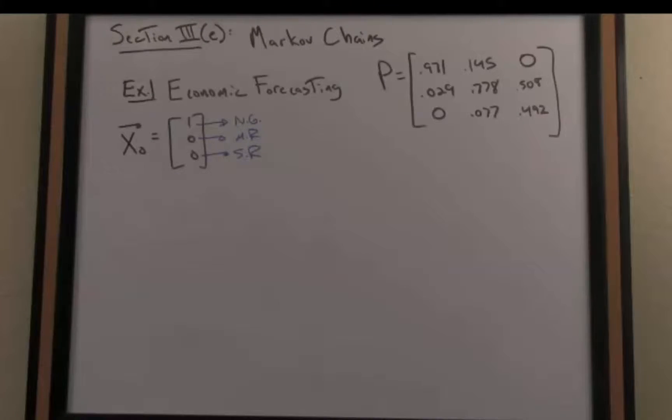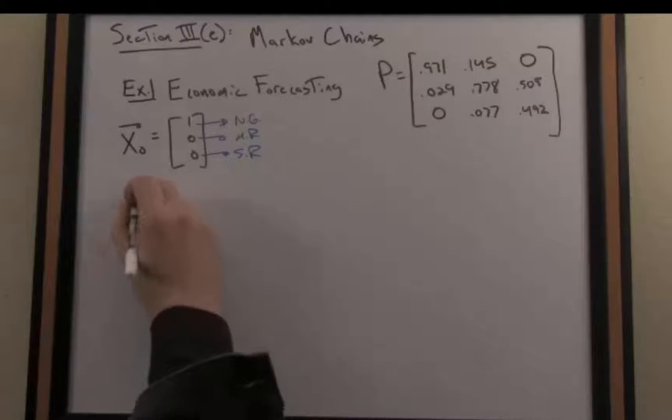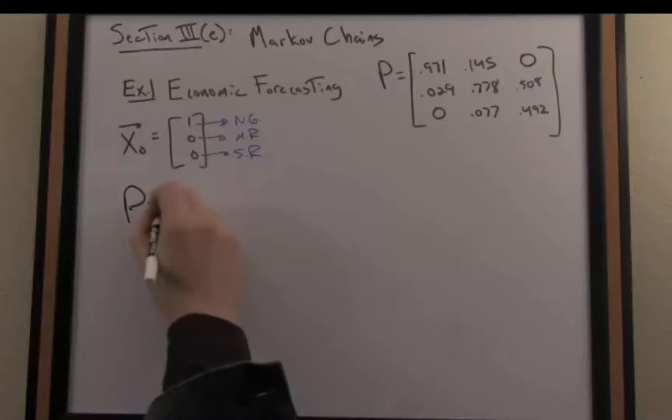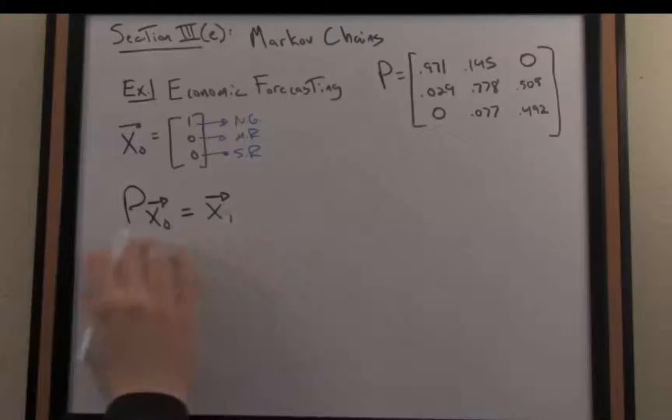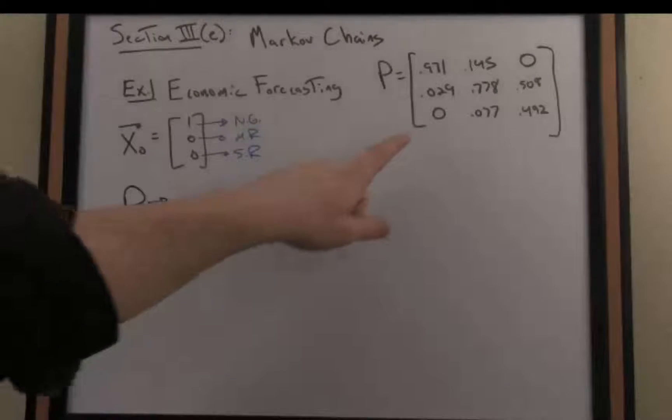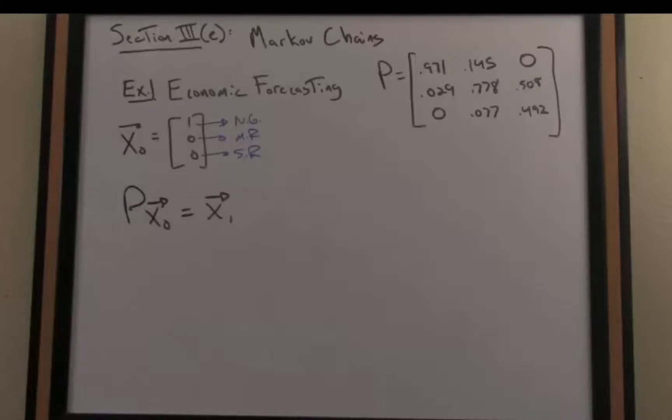So remember then by the Markov condition as we called it, each subsequent state in our chain depends only on the previous state and the way we transition from state to state is we multiply essentially by this transitional probability matrix, the matrix P. Let's go ahead and do that computation and find the prediction for our probability vector for year 1.